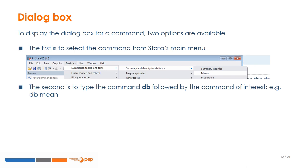Entering a Stata command through a dialog box, rather than directly in the command window, can make it easier to use the correct syntax and access all of its possible options. Dialog boxes can be accessed in two ways: the first method is to select the command through Stata's main menu — for instance, to launch the dialog box of the Stata command 'mean'. Alternatively, a dialog box can be accessed by writing 'db' followed by the name of the command, for example, 'db mean'.